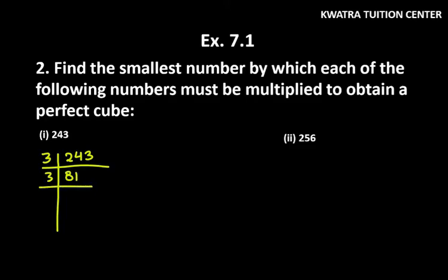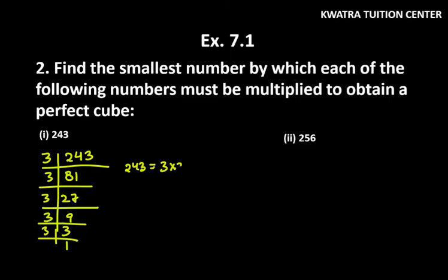81 divided by 3, you will get 27. 27 divided by 3, you will get 9. Then divide it by 3, you will get 3. And the last one is 1. Now, how do you write 243 in terms of factors? 3 × 3 × 3 × 3 × 3.